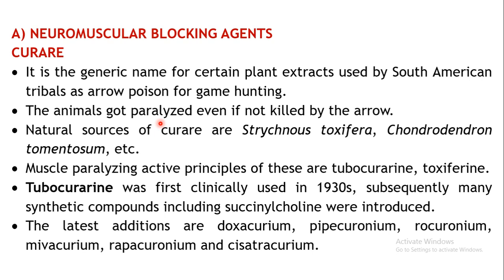Earlier, the arrow poison — curare — was obtained from sources like Strychnos toxifera, Chondodendron tomentosum, etc. The principal constituents responsible for this paralysis were tubocurarine and toxiferin. Tubocurarine was the first neuromuscular blocking agent clinically used, way back in the 1930s, and subsequently a number of agents have been added to this particular list.